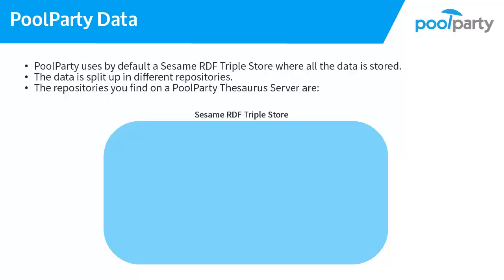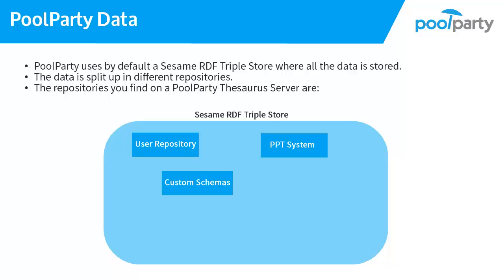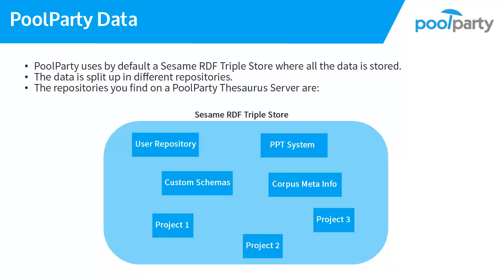The created repositories are UserRepository, PoolPartyThesaurusSystemRepository, CustomSchemasRepositories, CorpusMetaInfoRepository, and each project's data is stored in its own repository. Let's take a look at where to find them and what they contain.